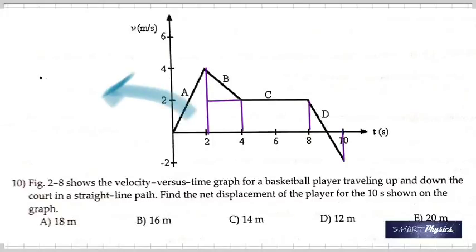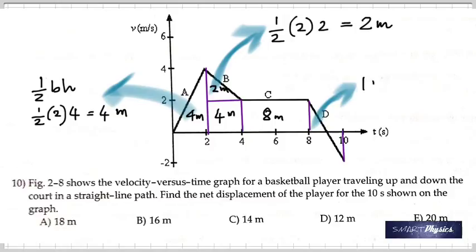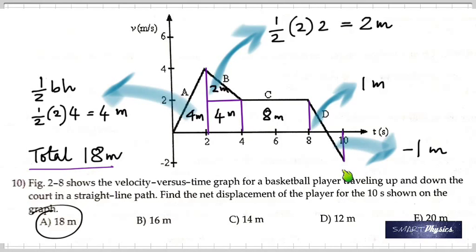Last question: find the net displacement from a velocity-time graph by finding the area under the curve. The areas of the sections are: a triangle of 4 m, a small triangle of 2 m, then 4, 8, 1, and negative 1 — the last part is negative because it's on the negative side of the graph. The two negative and positive sections cancel, and the remaining total is 18 meters.